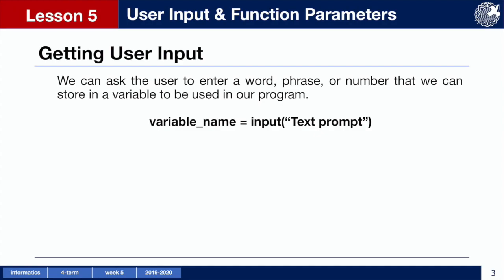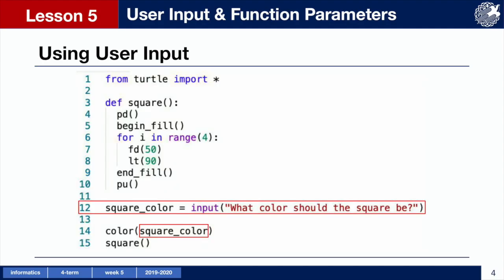To write programs that give users the ability to interact with and control parts of our code, we can use the command input. To save the input that the user gave, we assign it to a variable. We type the name of our variable followed by an equal sign, and instead of entering a value ourselves, we use the command input followed by a set of parentheses. Inside the parentheses we write the text prompt that we want the user to see inside quotation marks. In this code we're asking the user to determine what color our square should be. We've named the variable squareColor and are asking 'what color should the square be?' and are then using this variable value to assign a color to the turtle before it draws the square.